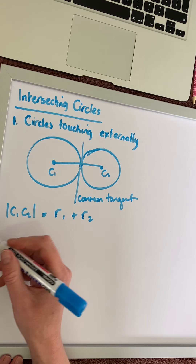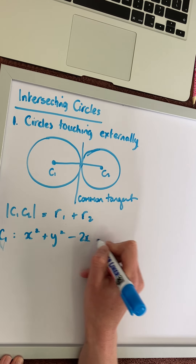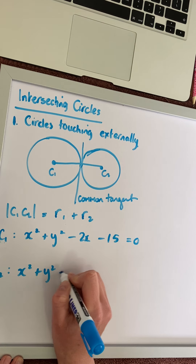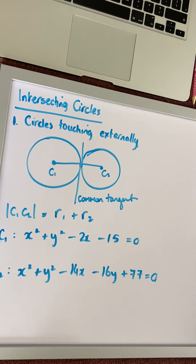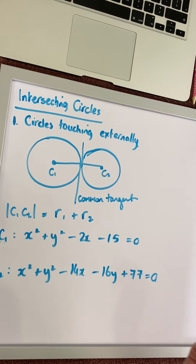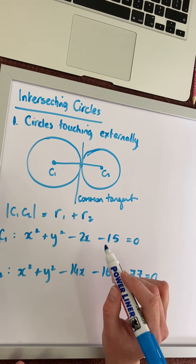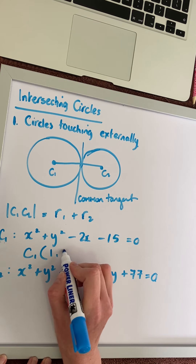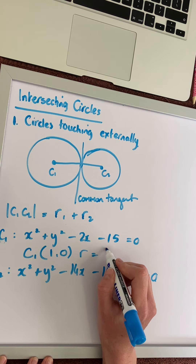So first of all, we're going to look at two circles. Circle 1 has equation x squared plus y squared minus 2x minus 15 is equal to 0. And circle 2 has the equation x squared plus y squared minus 14x minus 16y plus 77 equals 0. When we're finding out whether they touch internally or externally, we need to find their center and their radius, using minus g, minus f, and the radius is the square root of g squared plus f squared minus c. The center of circle 1 is the coordinate 1, 0, and the radius is the square root of 1 squared plus 0 squared minus minus 15, which gives us a radius of 4.